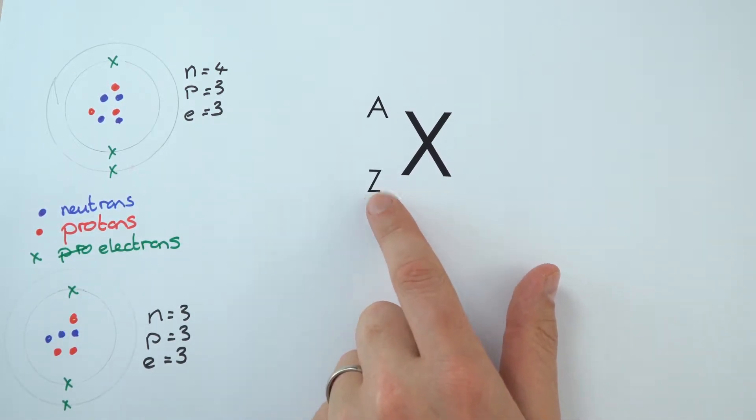The one at the bottom is called the Z number and this stands for the number of protons, and it's the number of protons that defines the element.